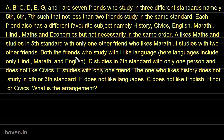Let us take a few more examples on linear sitting arrangements. These examples will be on complex sitting arrangements in which one person is attached to two different entities. For example, a student is studying a subject and is studying in a standard or a class, so a student has to be attached to two entities. We will take all examples of this type where two or more entities are involved.